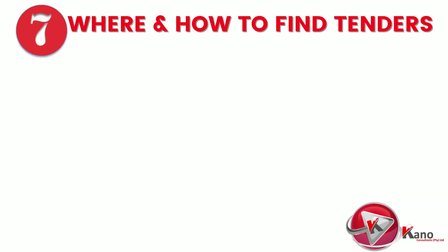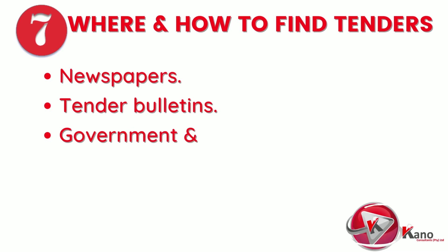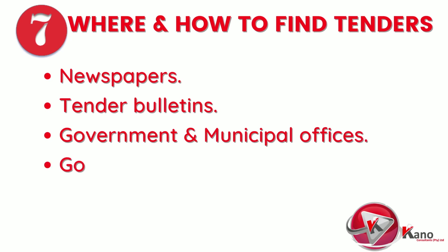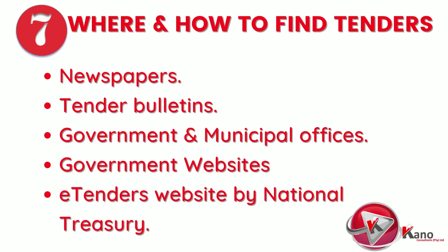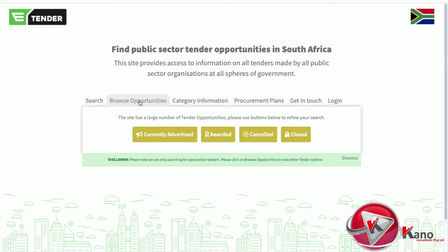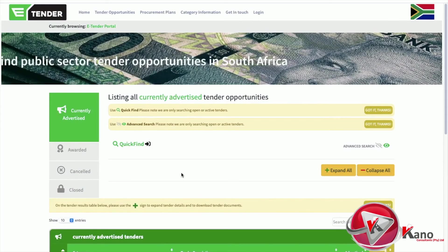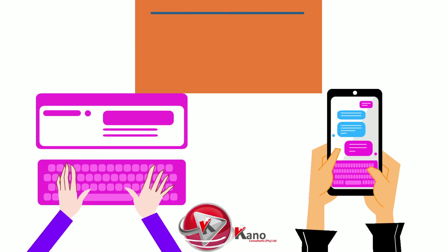You may be wondering how to find advertised tenders in South Africa. Government departments, municipalities, and state-owned companies advertise tenders on various platforms including newspapers — both local and community — government tender bulletins, government offices, municipal offices, and the websites of various government departments. There is also an e-tender website hosted by the National Treasury, which provides access to information on all tenders made by all public sector organizations at all spheres of government. The link to this website is included under this video.